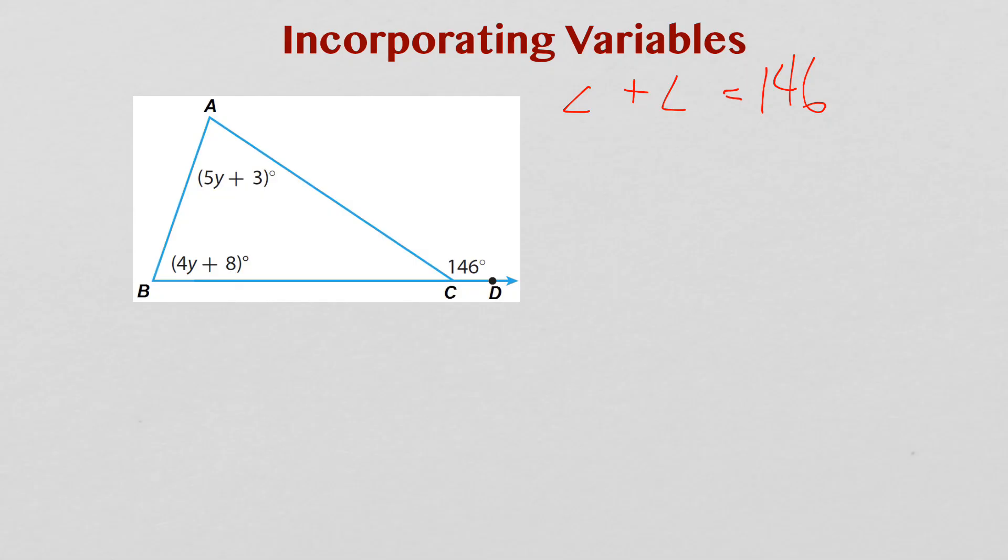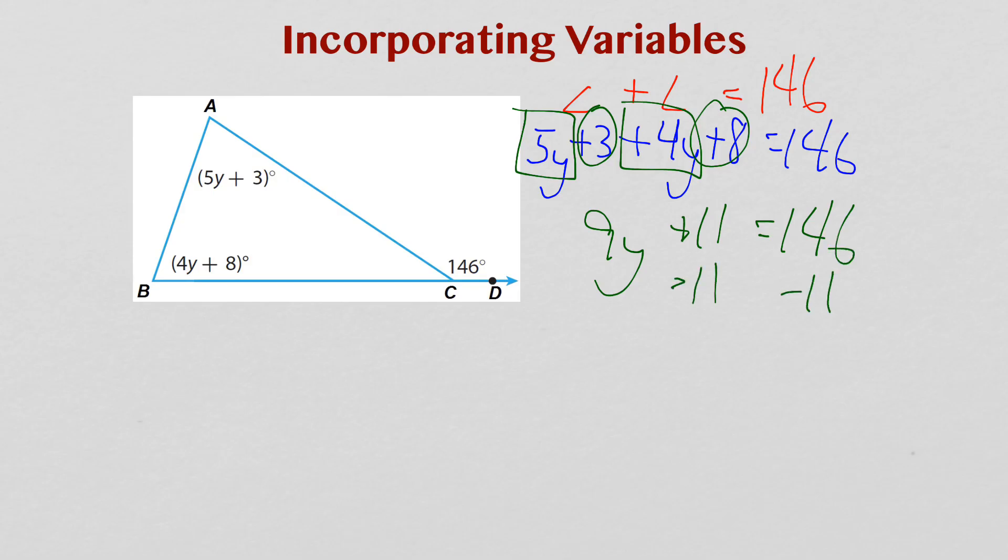So I'll just take those. The first remote interior is 5y plus 3. And the second remote interior is 4y plus 8. And again, I know that they equal 146 based off of our rule. I'll go ahead and solve this. So 5y plus 4y is 9y. Plus 3 and plus 8 is plus 11. So 9y plus 11 equals 146. I'll subtract 11. Gives me 9y equals 135. Divide by 9. And you end up with y equals 15. Again, it doesn't mean that those angles are 15 degrees. It means y equals 15. Plug the 15 right into these expressions. And you'll figure out how many degrees each of those angles are.